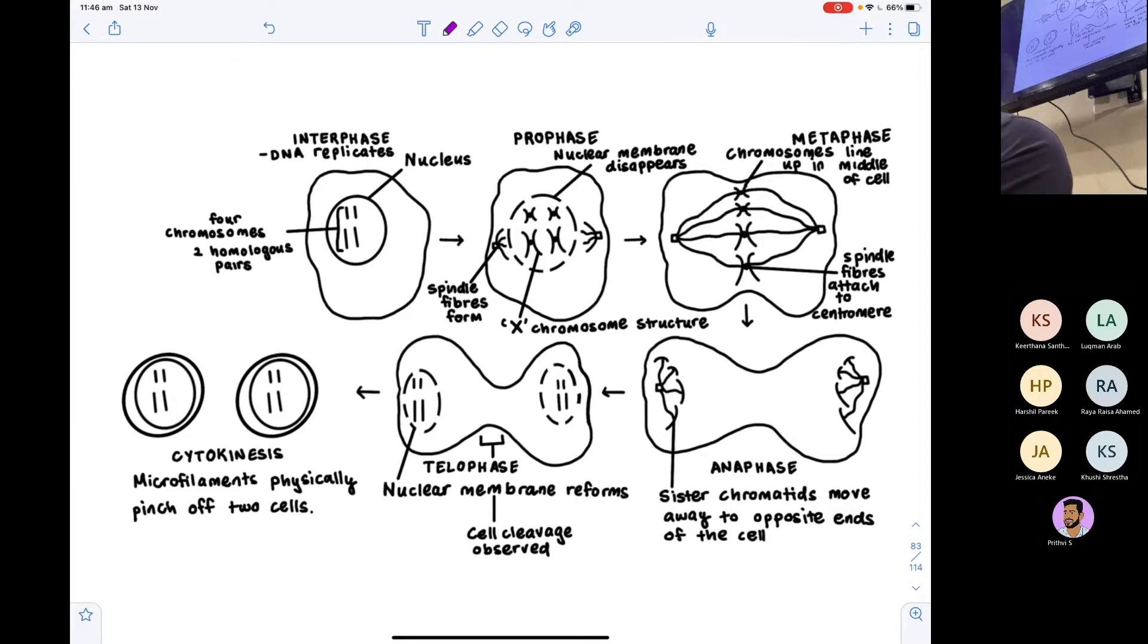How many homologous pairs do we have here for this cell? Good. So what's the diploid number for this cell? Two n is a diploid number, but what's the number? Two n equals four, that's what you're saying here. So this is some creature from another species that has four chromosomes.